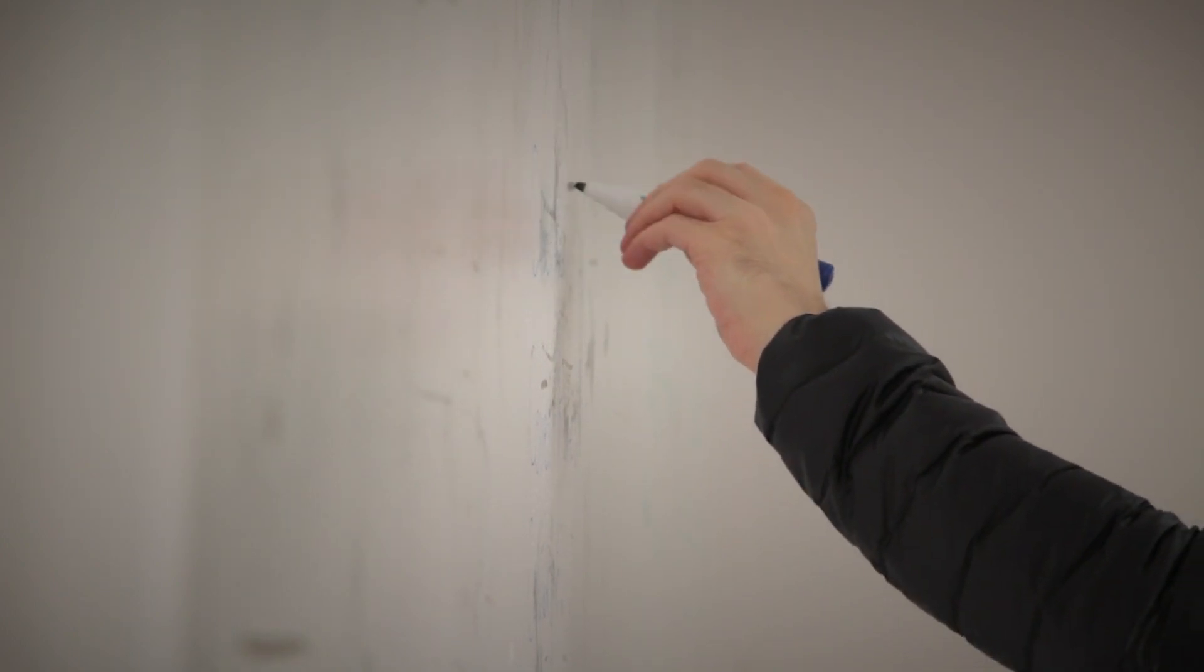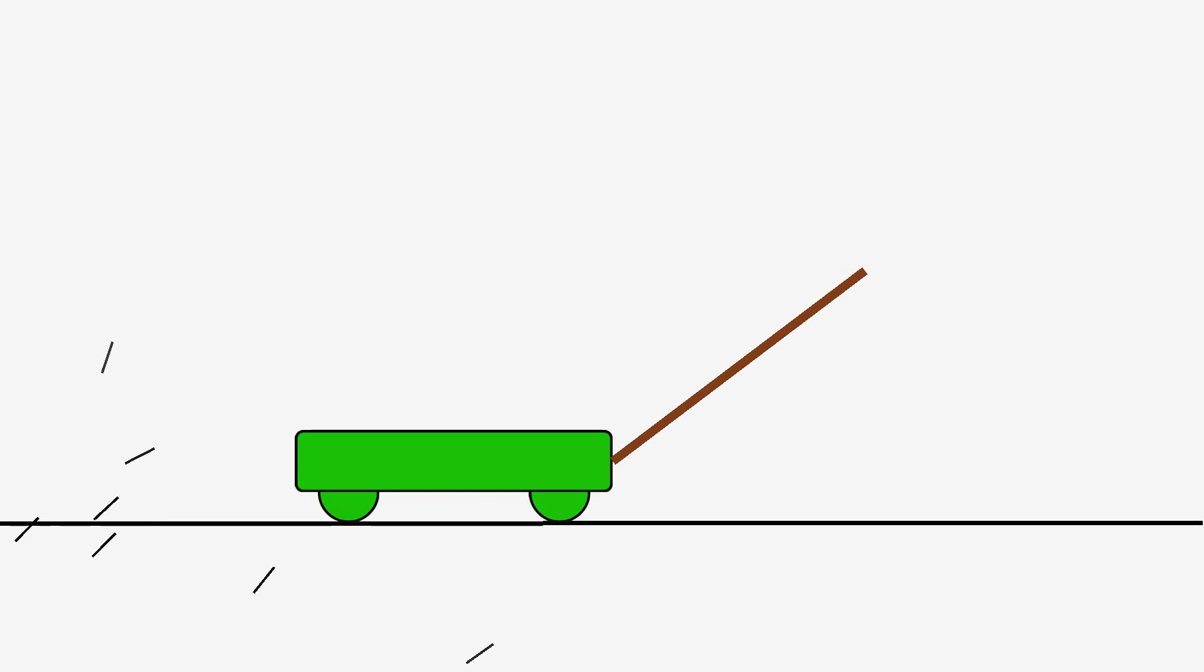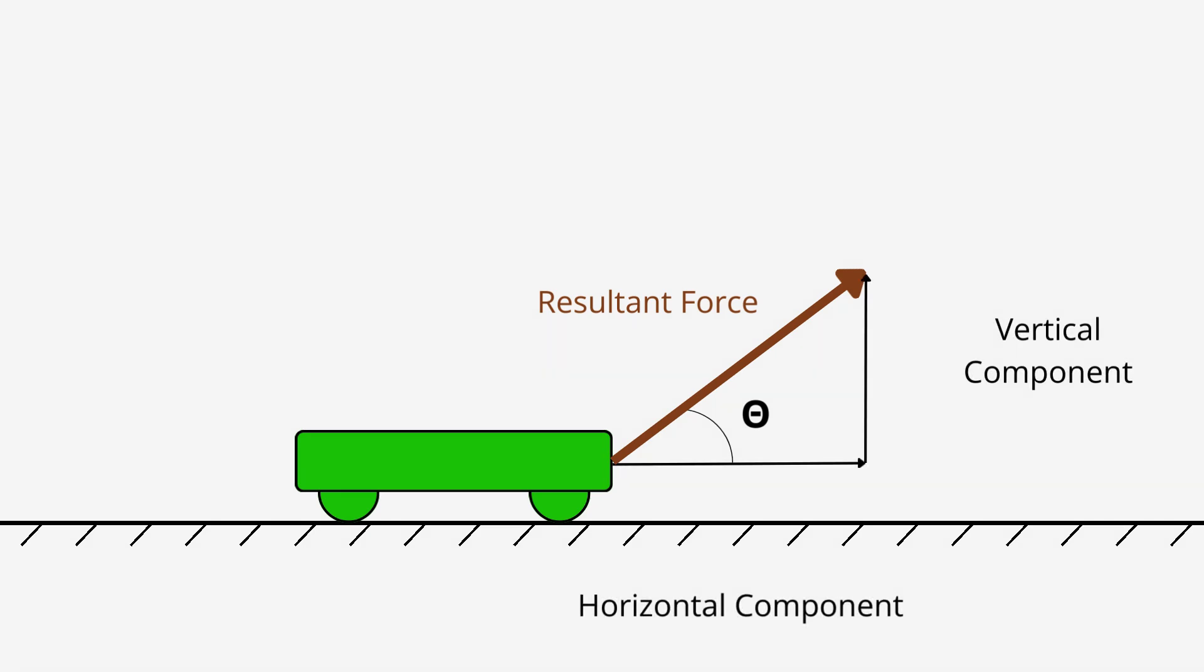This means the object is either stationary or at a constant speed. A simple example is a child pulling a trolley with a piece of rope. They will pull it at an angle. This is the resultant force, the overall force going up the rope. But it can be broken down into a horizontal and vertical force, known as component forces. These will then add to form the resultant force. Two component forces together have the same effect as the single resultant force.